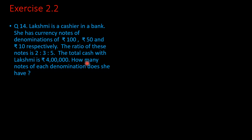Children, from this question we can see we have to find the number of notes of each denomination. Lakshmi has rupees 100 notes, 50 rupee notes and 10 rupee notes. The ratio is given as 2:3:5. Ratio is a comparison — it means if Lakshmi has 2 notes of rupees 100, she has 3 notes of rupees 50 and 5 notes of rupees 10. Here, 100 rupee notes is the lesser number, so we have to take that number as y.